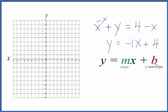The y-intercept is 4, so we go to 4 on the y-axis. That's where we intercept the y-axis. The slope is negative 1, but it's helpful to call this negative 1 over 1 so we can use rise over run.